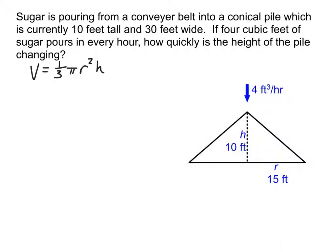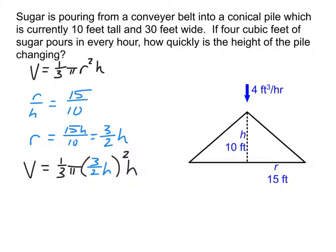To eliminate r, I use the proportion r/h = 15/10. Solving for r by multiplying both sides by h gives r = 15h/10, which simplifies to 3h/2. Now I plug that back into the original volume equation so the entire equation is just in terms of h, and I won't end up with dr/dt in my final answer.